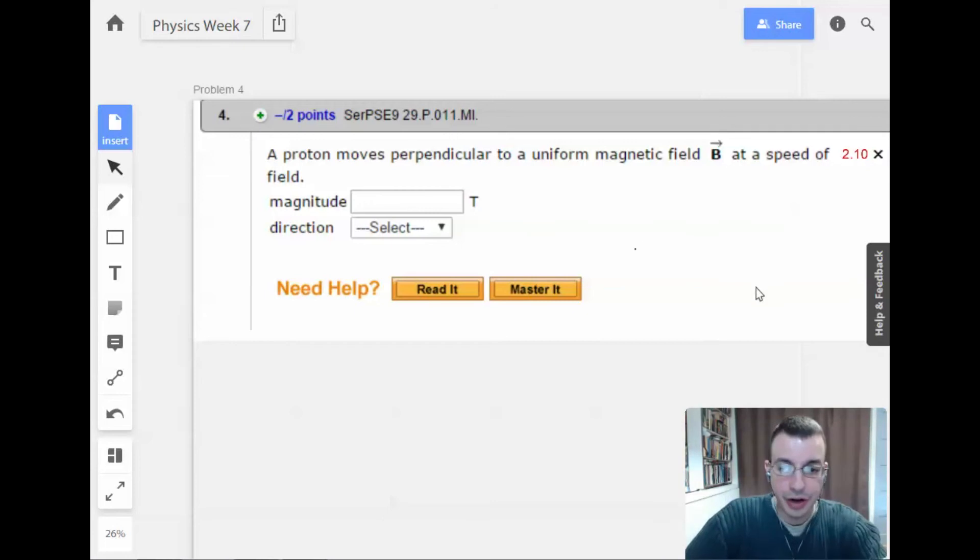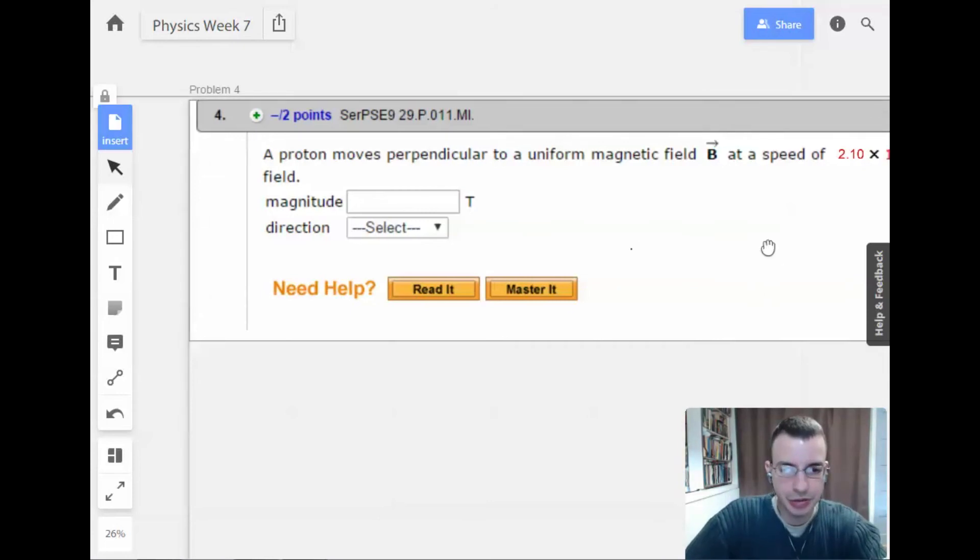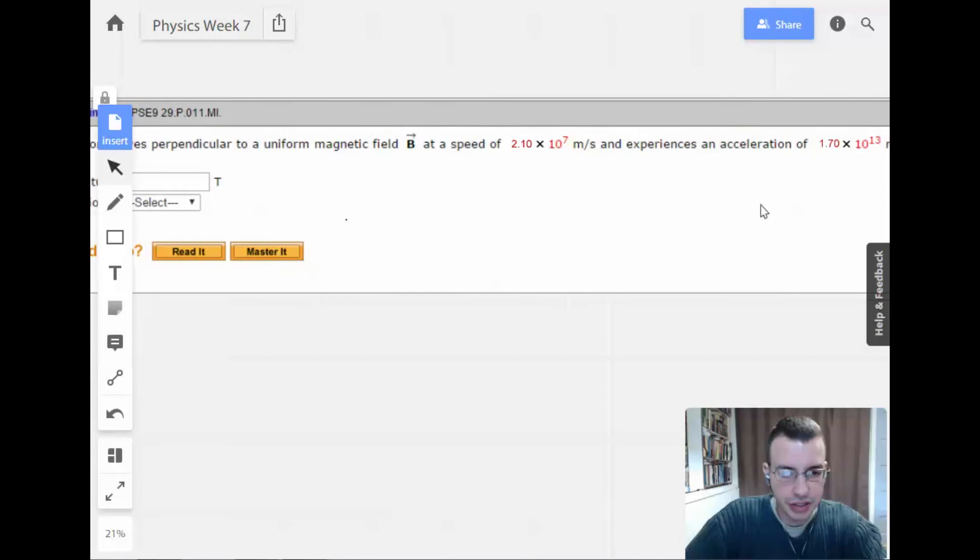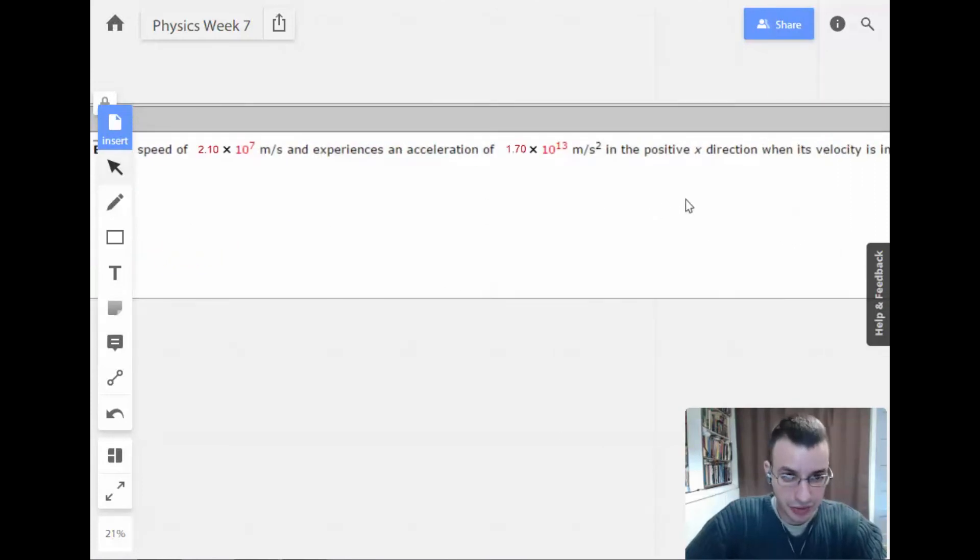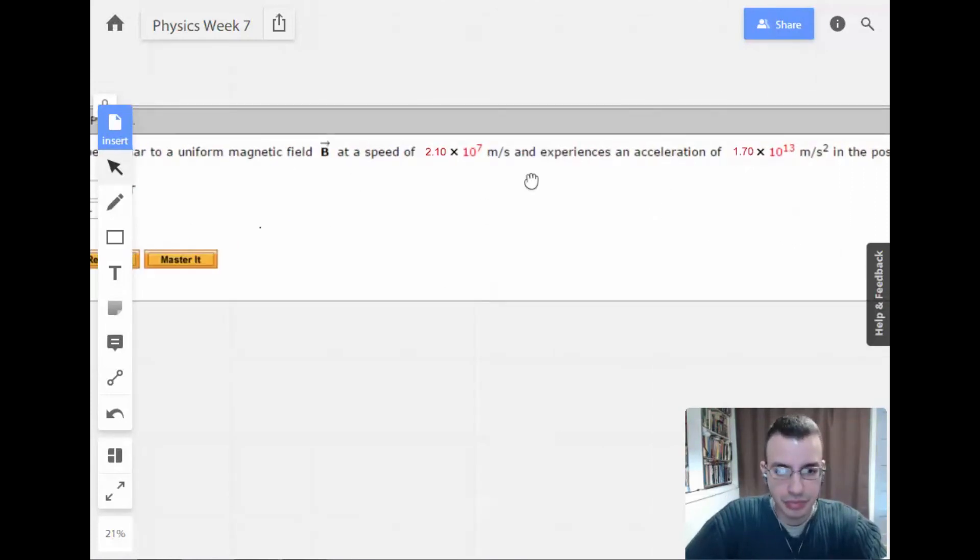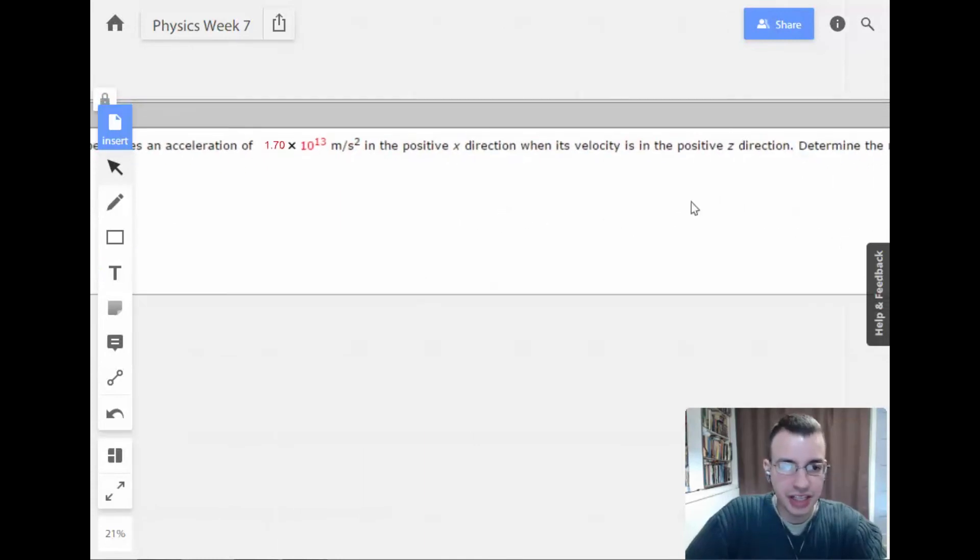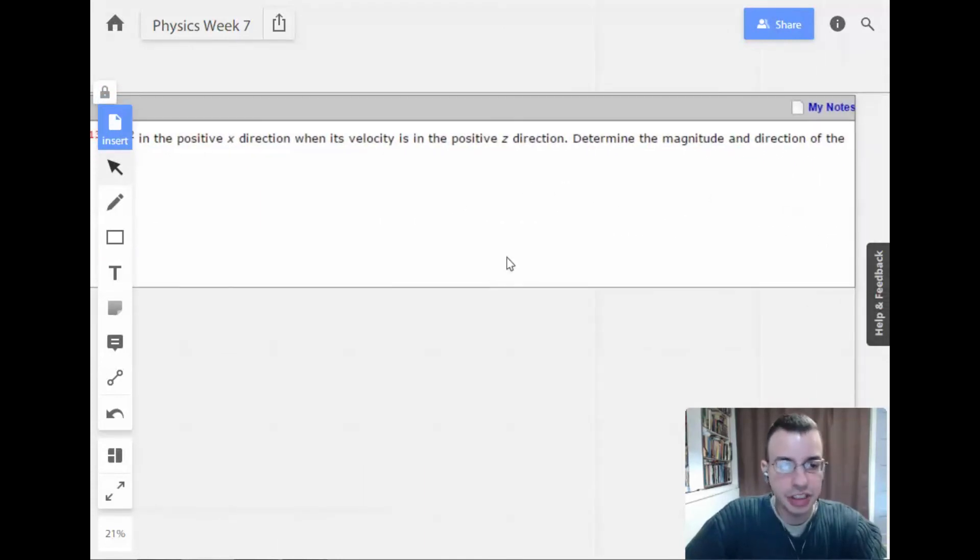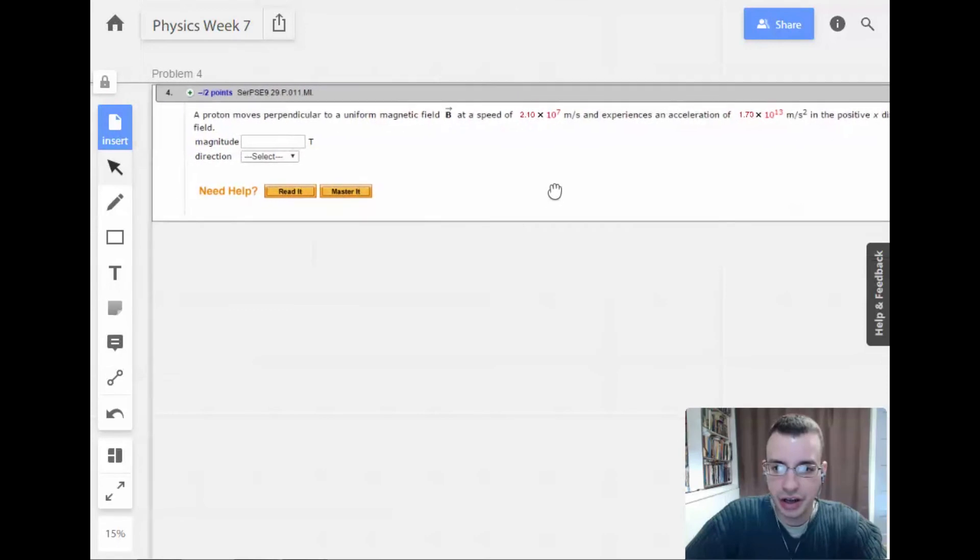Week 7, problem 4. A proton moves perpendicular to a uniform magnetic field at a speed of 2.1×10^7 m/s and experiences an acceleration of 1.7×10^13 m/s² in the x direction. When its velocity is in the z direction, determine the magnitude and direction of the field.